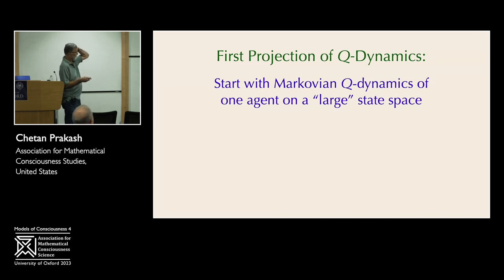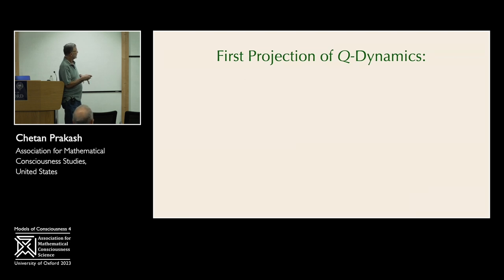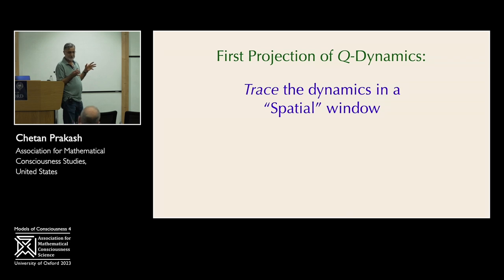And the way we suggest this process takes place is that this extremely rich Q dynamics that I mentioned is observed in a somewhat ignorant fashion as an aspect of it which could turn out to be the physical. So we call that a projection. We're projecting down in complexity towards a simpler kind of situation. So if you start with the Markovian Q dynamics of one agent on a very large state space, an observer we define as an agent, another agent, which is really ignorant of the whole state space because that's too much. But it's observing the dynamics through certain windows. And we're going to be very precise about what these windows are.